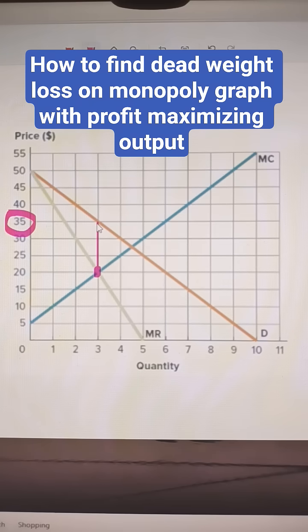The deadweight loss is the difference between the allocatively efficient point, which is where marginal cost and demand equal, and what the monopoly is going to choose.